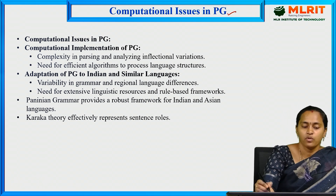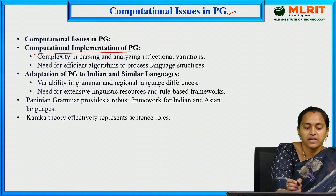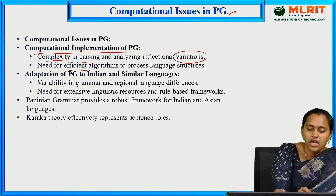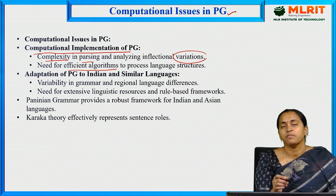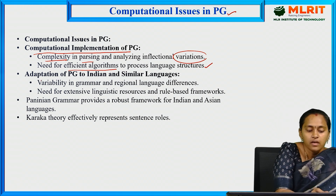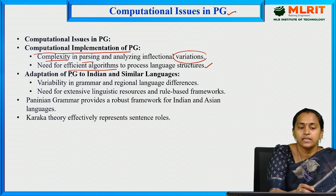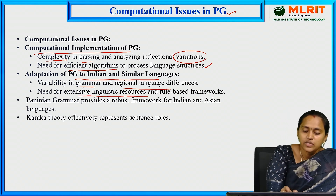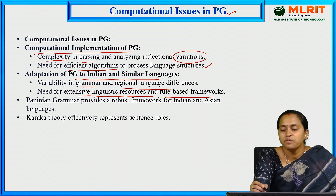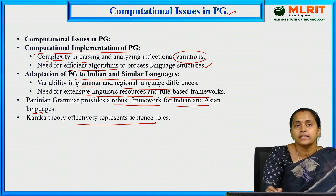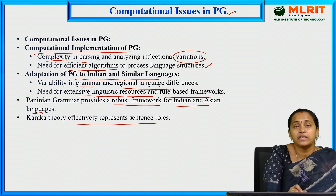There are some issues in the Paninian grammar model. These include computational implementation complexity — specifically, complexity in parsing and analyzing variations. We need efficient algorithms to process language structures from Hindi to English or Telugu to English. Other issues include variability in grammar across Indian languages, regional language differences, and the need for extensive linguistic resources and rule-based frameworks. Nevertheless, Paninian grammar provides a robust framework for Indian and Asian languages, and Karka theory effectively represents sentence roles.